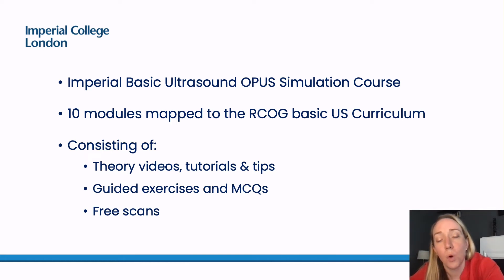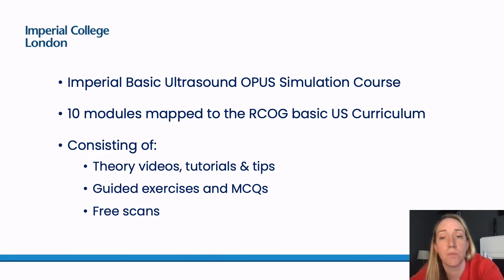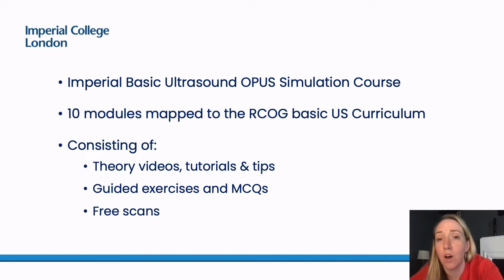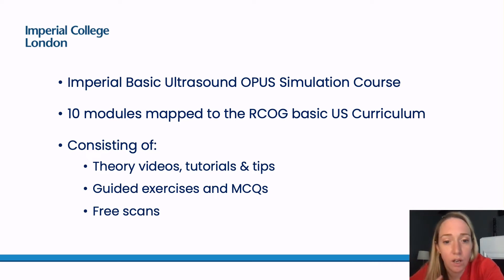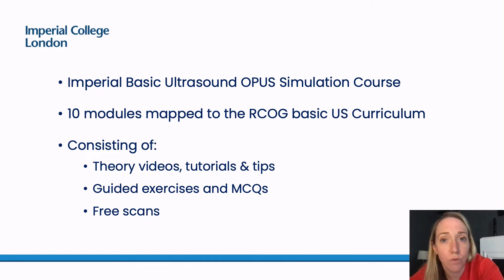OPUS has allowed us at Imperial to create a bespoke basic ultrasound course with 10 modules mapped to the Royal College of Obstetrics and Gynaecology's basic ultrasound competencies. This includes modules covering basic biometry, placental location, AFI and CRL. These modules consist of theory videos, tutorials and tips, guided exercises, multiple choice questions, and free scans.